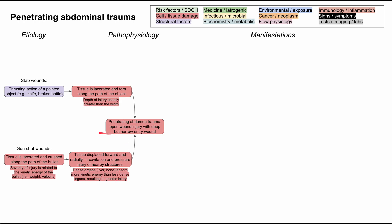In any case, no matter how you get the penetrating trauma, you'll have an open wound injury with a deep but narrow entry wound. Now let's work our way into the manifestations and see how this might present in a patient. The first manifestation worth thinking about is hollow viscous perforation.